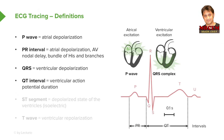The next interval is called the QT interval, which goes from the start of the QRS complex all the way to the end of the T wave. We also have the ST segment, which runs from the end of the S wave to the start of the T wave.